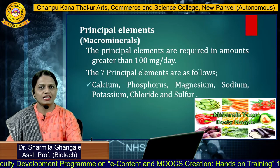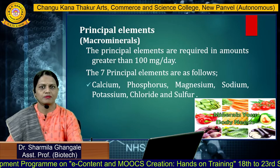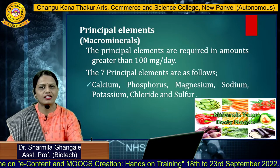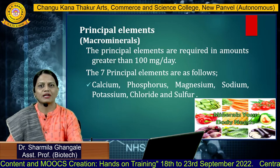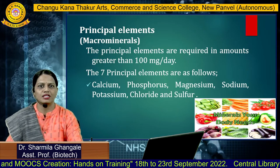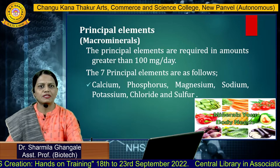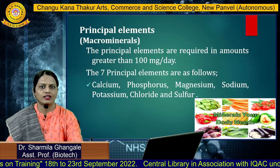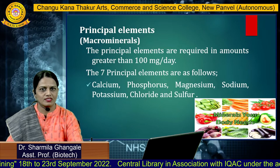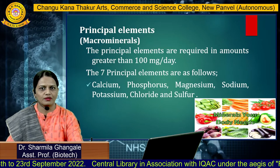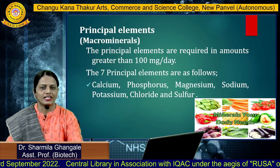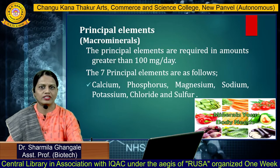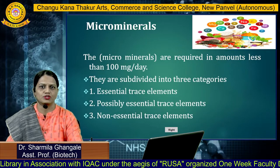These principal elements are also called macro minerals. The principal elements are required in amounts greater than 100 mg per day. The 7 principal elements needed in the body are calcium, phosphorus, magnesium, sodium, potassium, chloride, and sulfur. These are the 7 principal elements whose requirement in the body is greater than 100 mg per day.